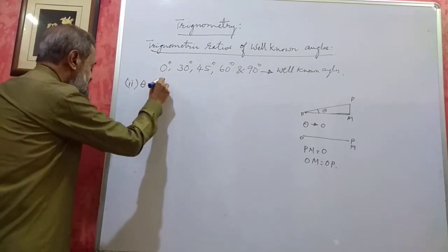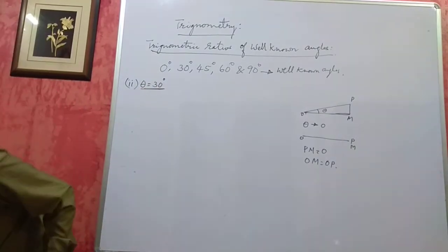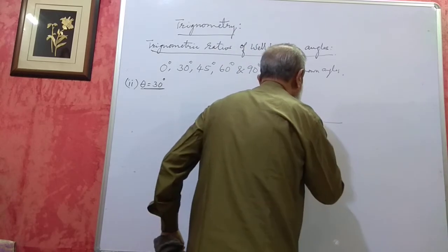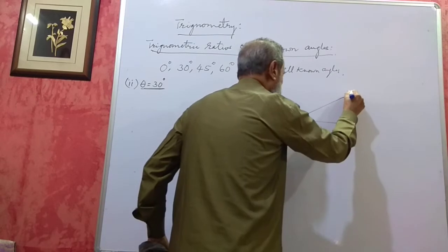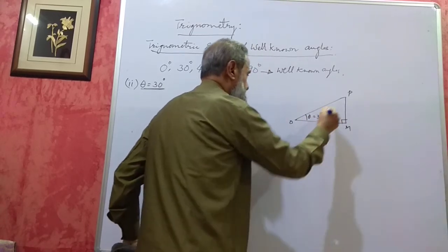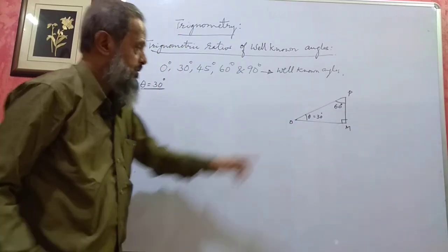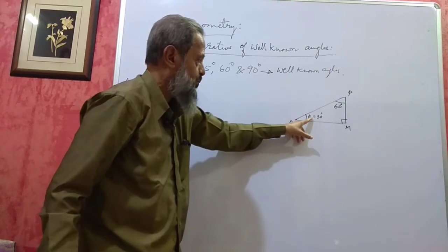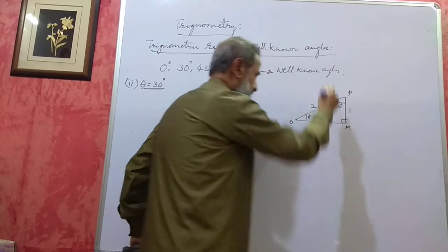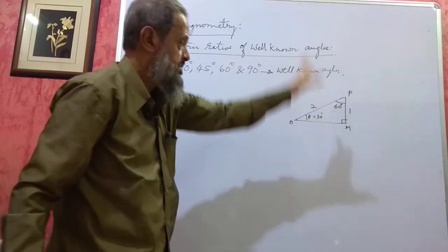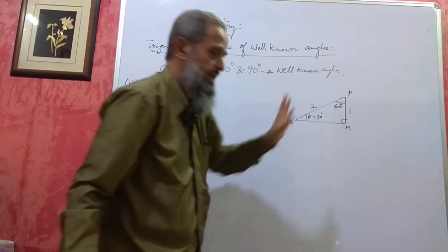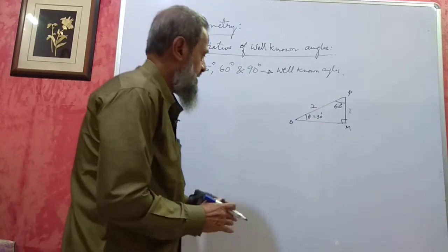Next, theta is 30 degrees. Going back to the right angle triangle OPM: if this angle is 90° and theta is 30°, the remaining angle is 60°. These two angles are in the ratio 1:2, so the side opposite 30° (PM) is half the hypotenuse (OP). If we take PM as 1, OP will be 2. Applying Pythagoras theorem: OM² = OP² − PM² = 2² − 1² = 4 − 1 = 3, so OM = √3.